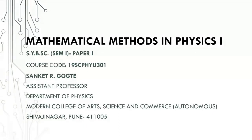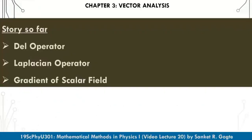Welcome to this video lecture of 19SC PHYU 301. We have been discussing the third chapter. Let's quickly revise the topics discussed so far. First, we defined the del operator, which is a vector differential operator. It is defined as partial differentiation with respect to x into unit vector i, partial differentiation with respect to y into unit vector j, and partial differentiation with respect to z into unit vector k. It is a vector operator with no value at any given point by itself.